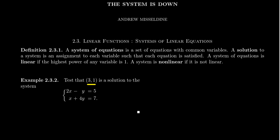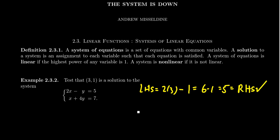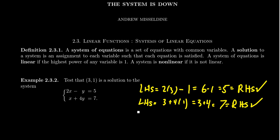Now let's check the point (3, 1). If we plug x equals 3 and y equals 1 into the first equation, the left-hand side becomes 2 times 3 minus 1. 2 times 3 is 6, minus 1 is 5 — that is the right-hand side, so the first equation is satisfied. For the second equation, x plus 4y becomes 3 plus 4 times 1. 4 times 1 is 4, and 3 plus 4 equals 7, which is the right-hand side. So (3, 1) satisfies both equations and is indeed a solution to this linear system.